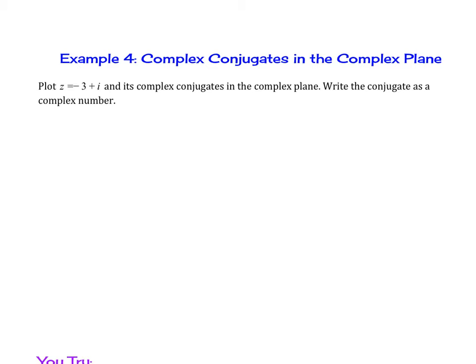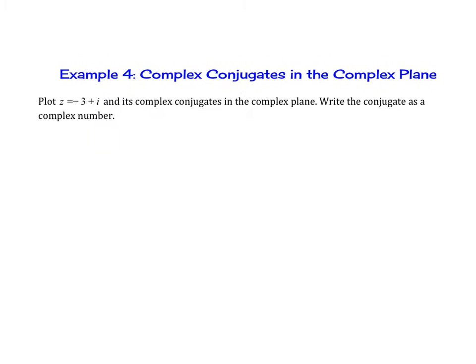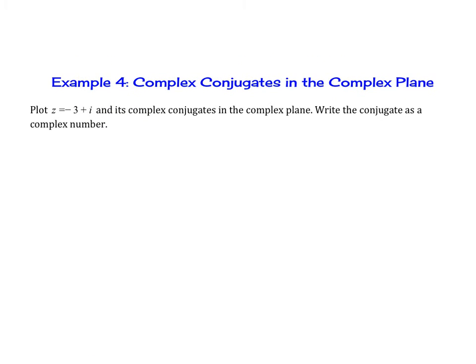Example 4: we're looking at complex conjugates in the complex plane. We're going to plot z equals negative 3 plus i and its complex conjugate in the complex plane. Then we're going to write the conjugate as a complex number. When we're writing the complex conjugate, what this is is just a reflection in the real axis.